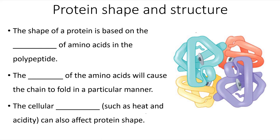It is the shape of a protein that determines the function of that protein. And the shape of a protein is based on the sequence or order of those amino acids in the polypeptide chains. The order of the amino acids will cause the chain to fold in a particular manner and give it its specific shape.